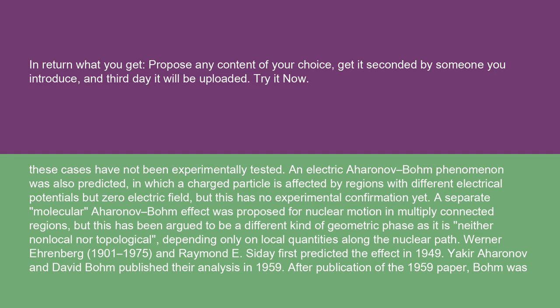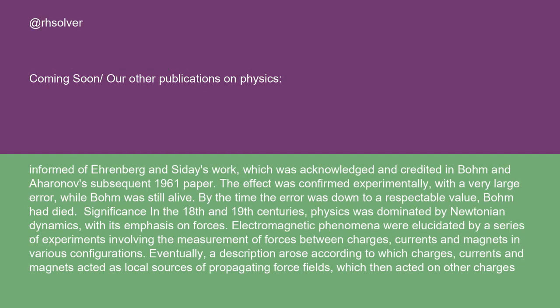Werner Ehrenberg (1901-1975) and Raymond E. Sidey first predicted the effect in 1949. Yakir Aharonov and David Bohm published their analysis in 1959. After publication of the 1959 paper, Bohm was informed of Ehrenberg and Sidey's work, which was acknowledged and credited in Bohm and Aharonov's subsequent 1961 paper. The effect was confirmed experimentally with a very large error while Bohm was still alive. By the time the error was down to a respectable value, Bohm had died.